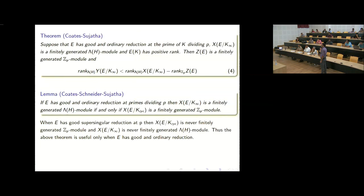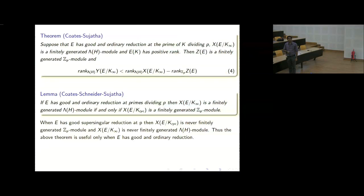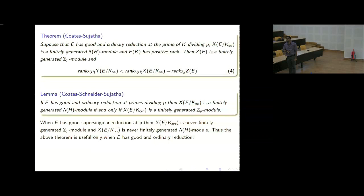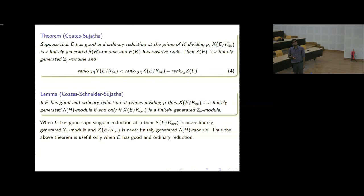There is a theorem by Coates and Sujata: if the dual Selmer is a finitely generated Z_P·H module, then the Z_P-corank of the fine Selmer is strictly less than the corank of the Selmer group as a Z_P·H module, further minus some additional terms. So the inequality holds; in fact, if Z_E has positive corank, it can be even smaller. This applies in the case when E has good and ordinary reduction at P, where the Selmer group is a finitely generated Z_P·H module.